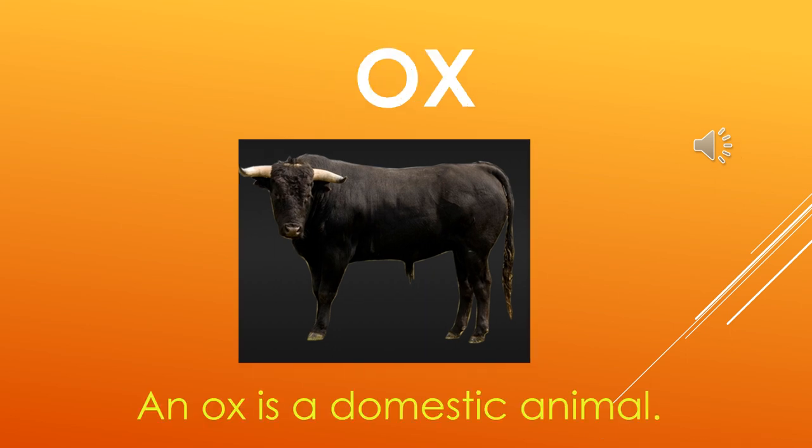Now we will be doing a few sentences with OX words. As I have already told you, ox is a type of animal. The sentence which I have written is: an ox is a domestic animal. An ox is a domestic animal.